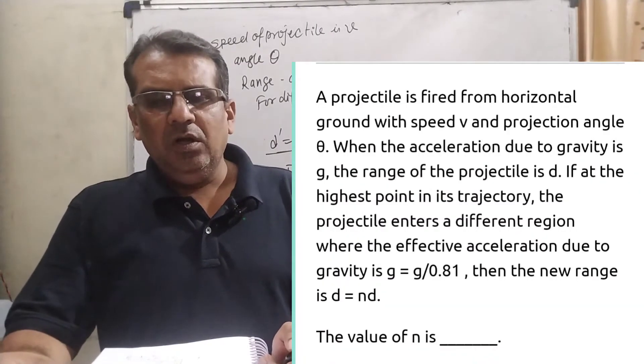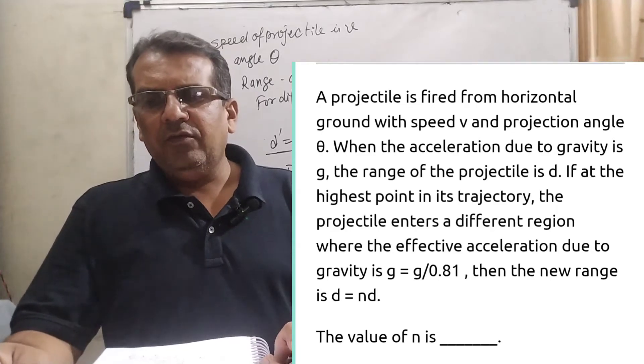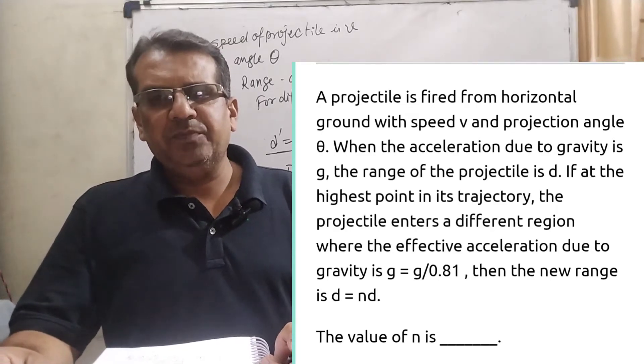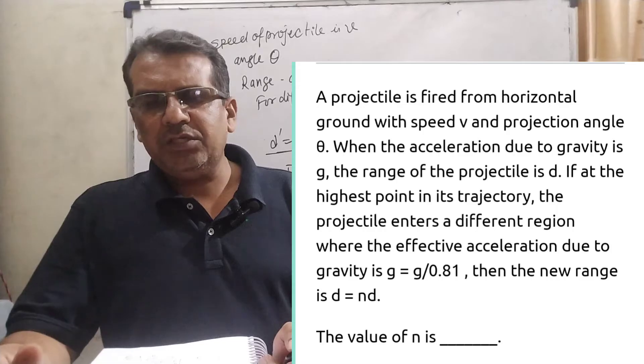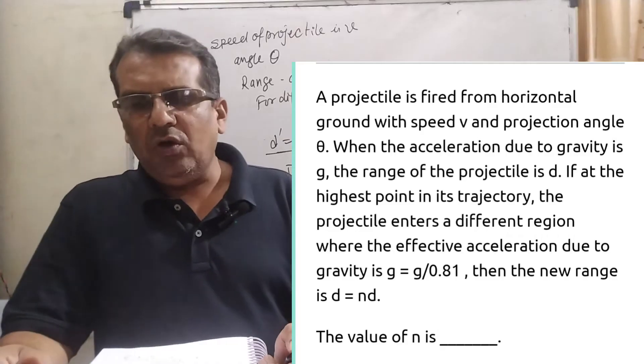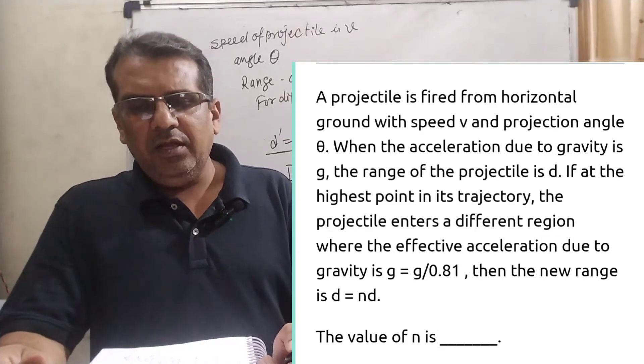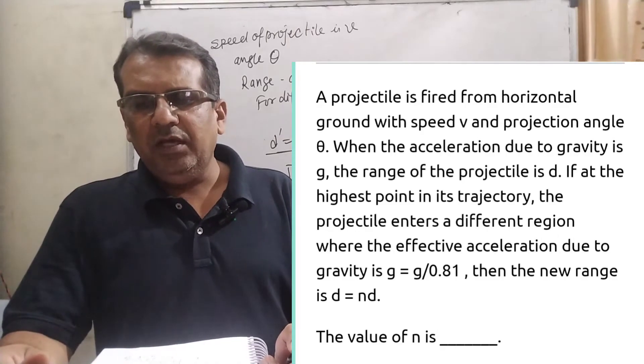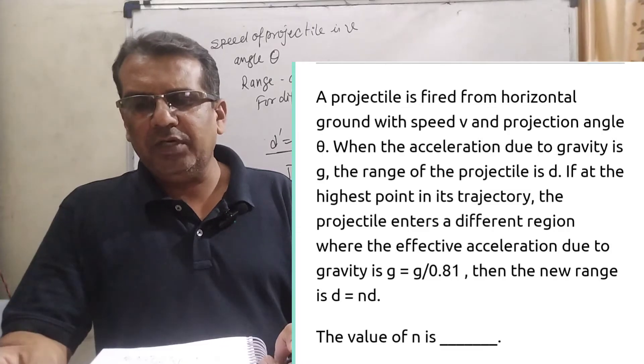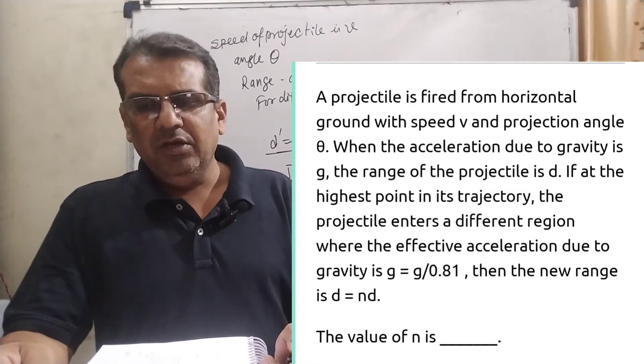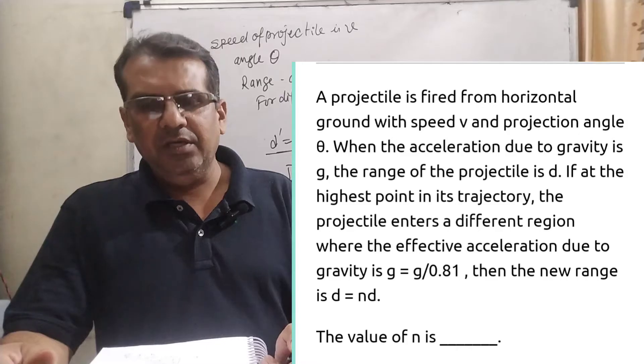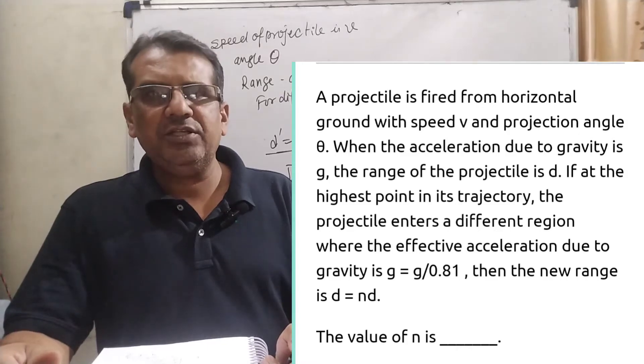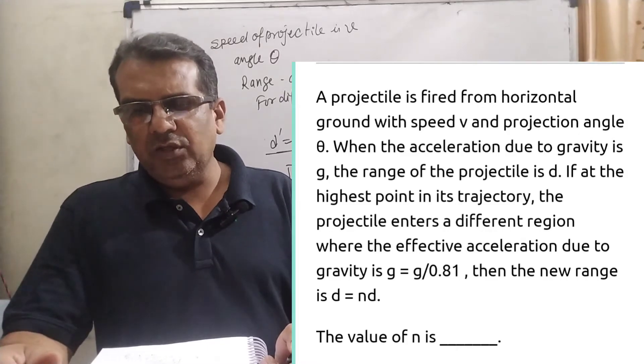Now here is the question. A projectile is fired from horizontal ground with speed V and projection angle theta. When the acceleration due to gravity is g, the range of the projectile is D. If at the highest point in its trajectory, the projectile enters a different region where the effective acceleration due to gravity is g dash equal to g by 0.81.